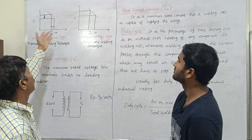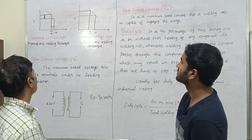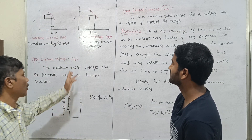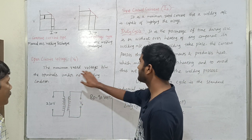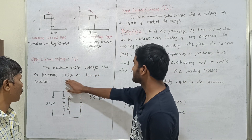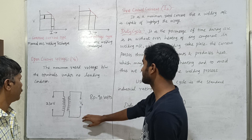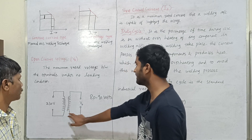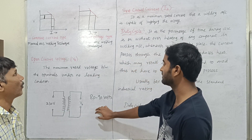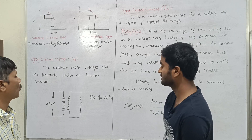If we use the curve, we can use a linear curve. Let's talk about open circuit voltage — the maximum rated voltage between the terminals under no loading condition. We use 230V supply, and the open circuit voltage is 80V to 90V.